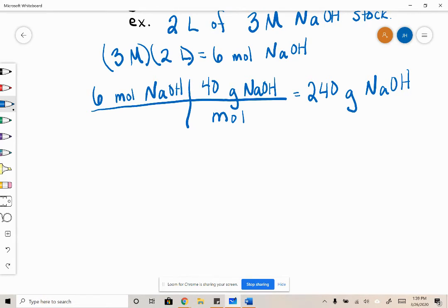Now if we had an experiment then that required, let's say we need 100 milliliters of 0.5 molar NaOH for some specific experiment.